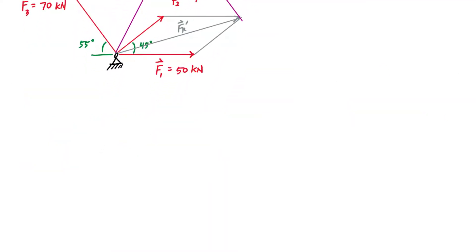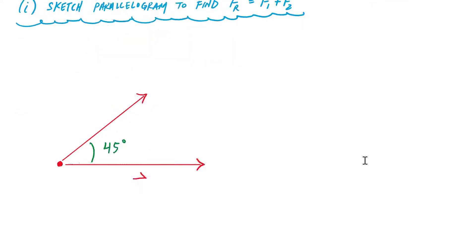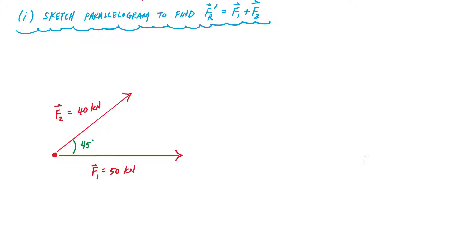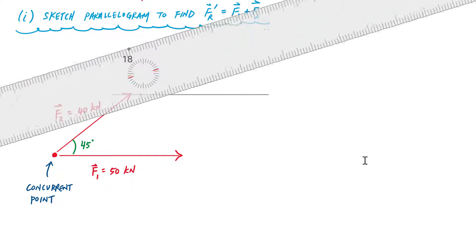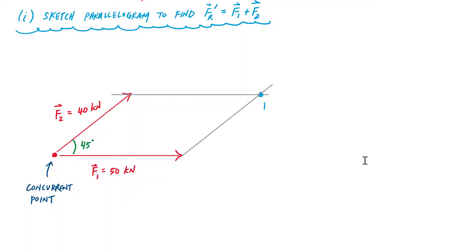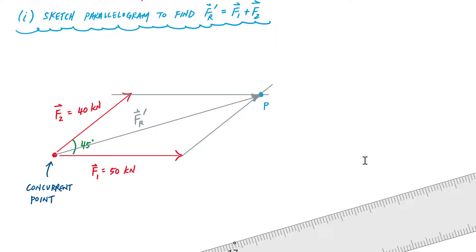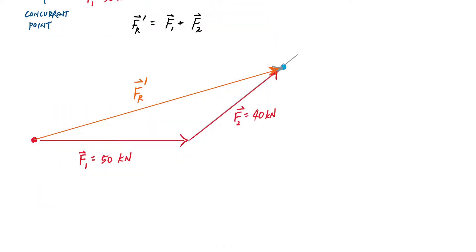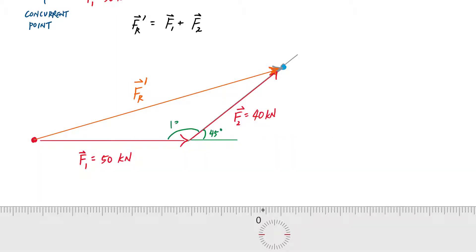Let's show the details. First, I'll sketch the parallelogram to find the resultant of F1 plus F2. I draw lines parallel at the head of each vector from the concurrent point — a line parallel to F1 at the head of F2, and a line parallel to F2 at the head of F1. The resultant vector points from the concurrent point to where those lines intersect. Choosing the vector triangle, the angle for F2 is 45 degrees, making the interior angle 135 degrees.